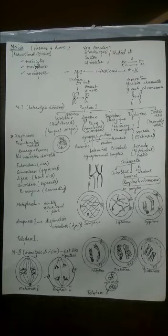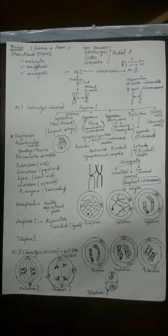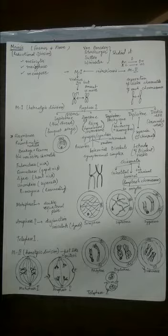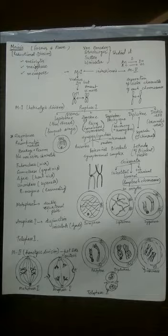During zygotene — 'zygo' meaning pairing or coming close — pairs of homologous chromosomes come close to each other. Homologous chromosomes exist because eggs and sperms contribute equal numbers of chromosomes. If 23 chromosomes come from the egg and 23 from the sperm, then chromosome 1 from the egg is similar to chromosome 1 from the sperm — these are homologous chromosomes.